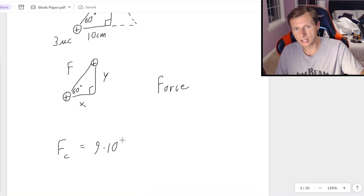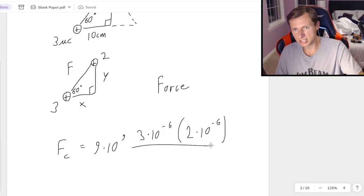I think finding the force first is a good idea because that's just going to be normal Coulomb's law, k q1 q2 over r squared. So k is 9 times 10 to the 9th. Q1, we'll call it the 3 again, the 3 microcoulombs, so 3 times 10 to the minus 6. And the other charge was 2 microcoulombs, so that's 2 times 10 to the minus 6.